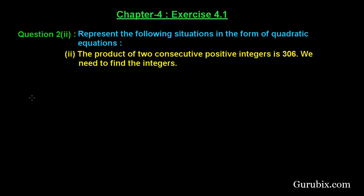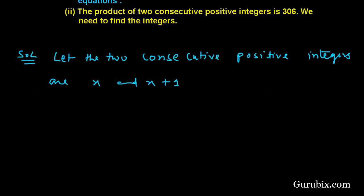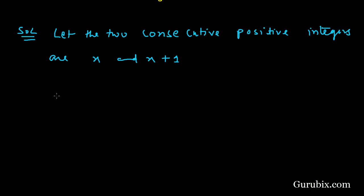Let the two consecutive positive integers be x and x plus one. According to the question, the product of these two consecutive positive integers equals 306. Multiplying x with the values in the bracket gives x squared plus x.